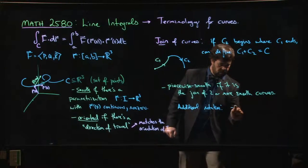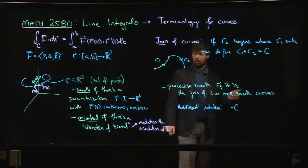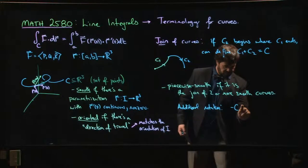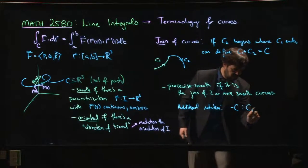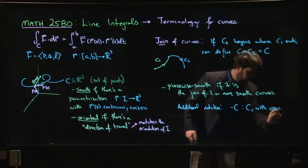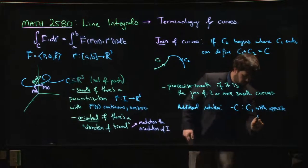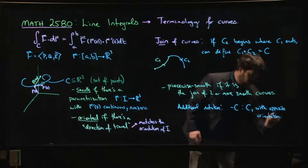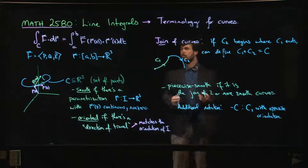We'll write -C. So if we're talking about oriented curves, this direction of travel, -C is going to mean C but with the opposite orientation. Okay?